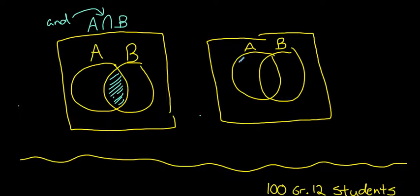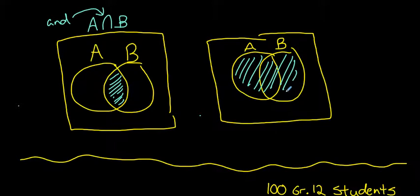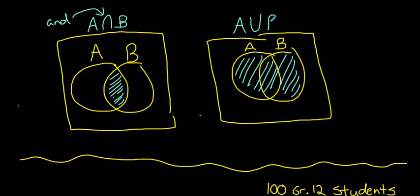If we want to look at the union of the two sets — meaning the elements that are anywhere inside A or B, including the intersection — we'd represent that area using the notation A ∪ B. This U represents the word 'OR'; it means the elements that are in A or B anywhere.